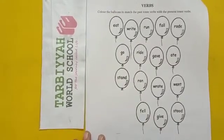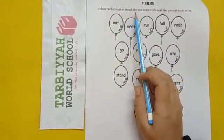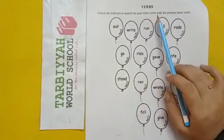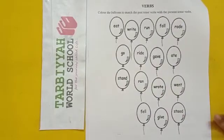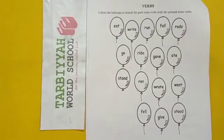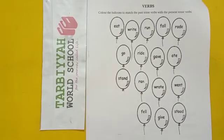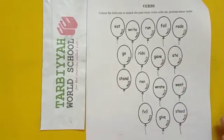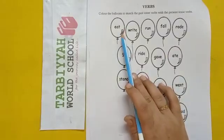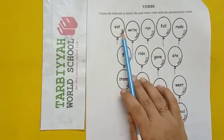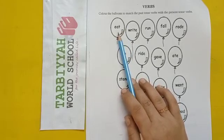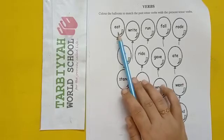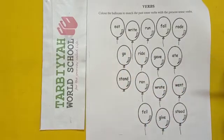Now come to this activity: color the balloons to match the past tense verbs with the present tense verb. You can take two different colors — one for past tense and one for present tense. Then you have to match them. For example, if you are coloring 'eat', which is a present tense verb, you will color it with red color.